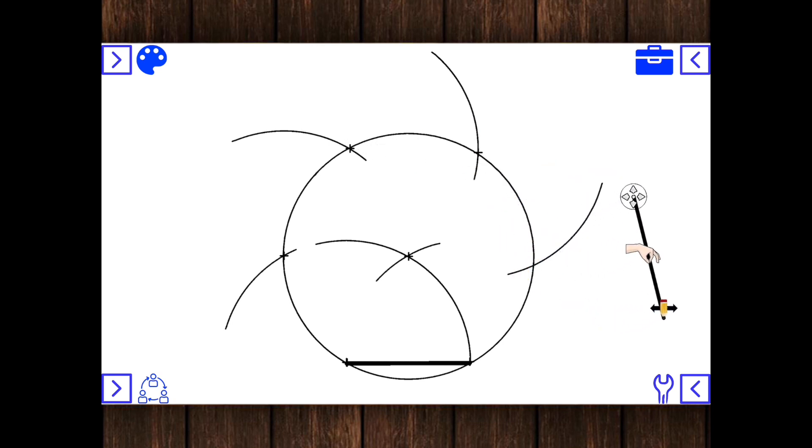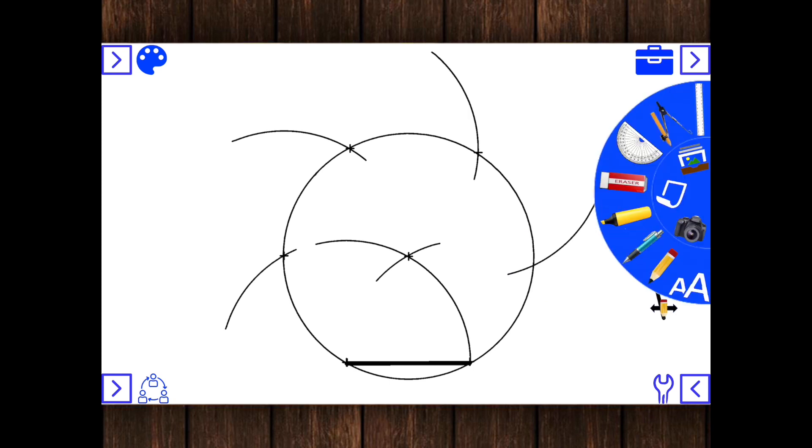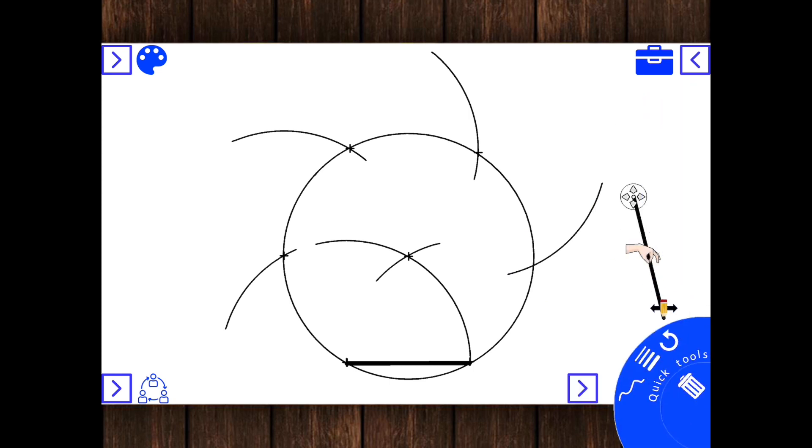And from these intersections, grab your pencil and ruler. And what you're going to do is you're going to draw a line from each of the intersections to form your hexagon. And there we go.